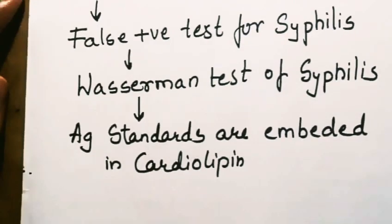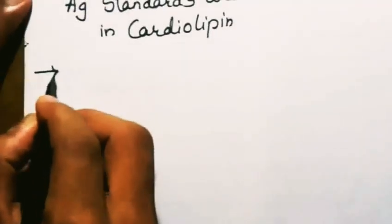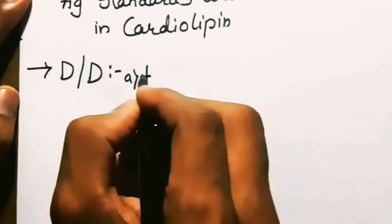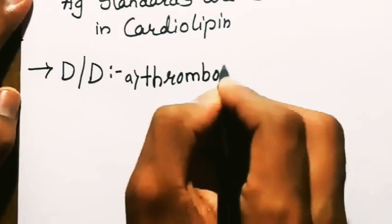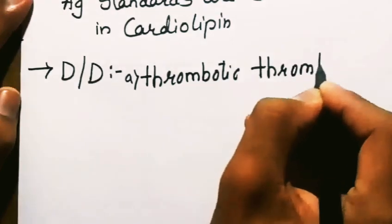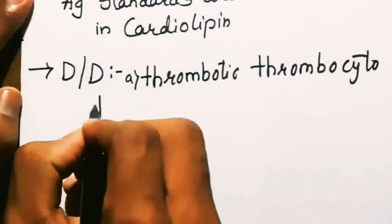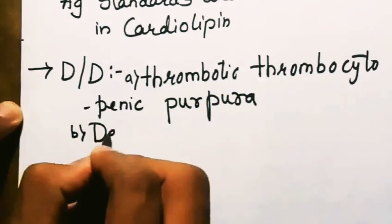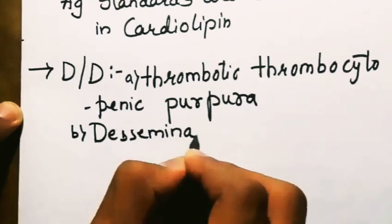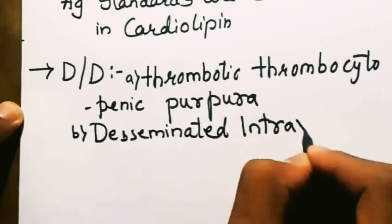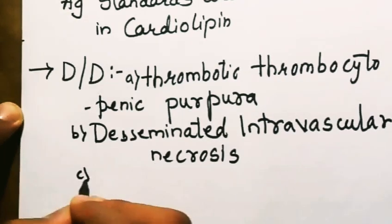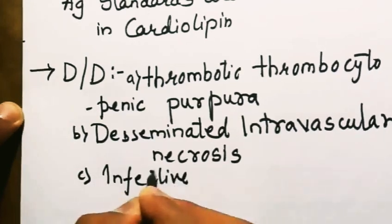Going to differential diagnosis of this disease. Firstly, it should be differentiated from thrombotic thrombocytopenic purpura, disseminated intravascular coagulation, and also from infective endocarditis.